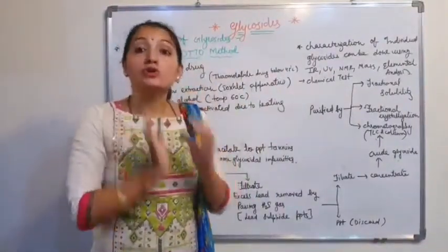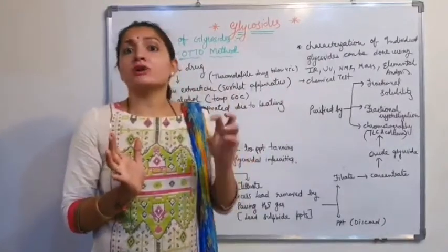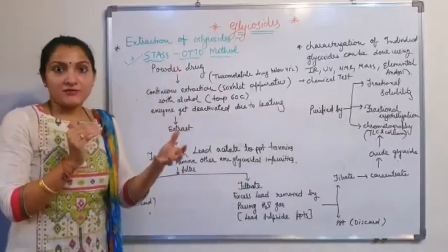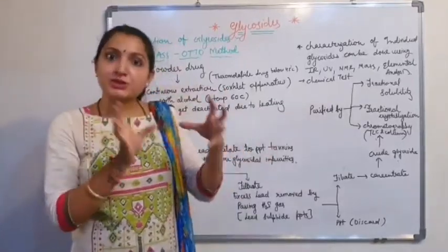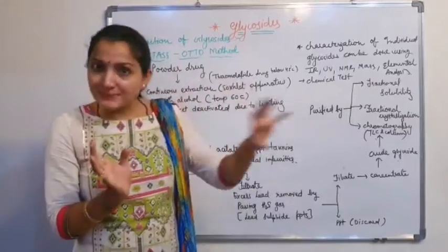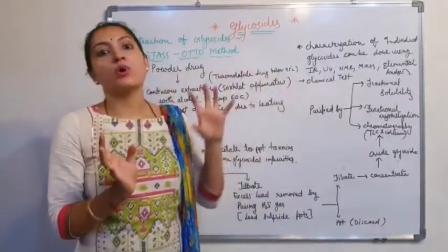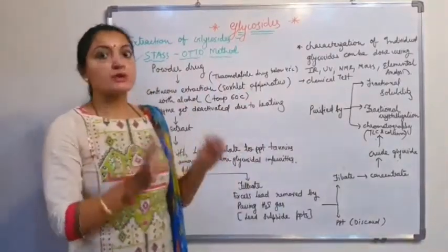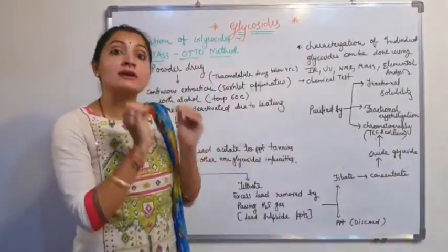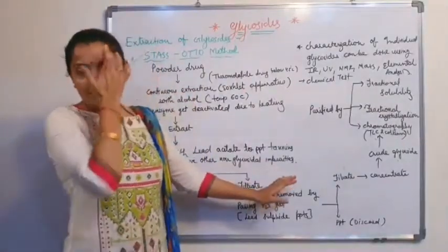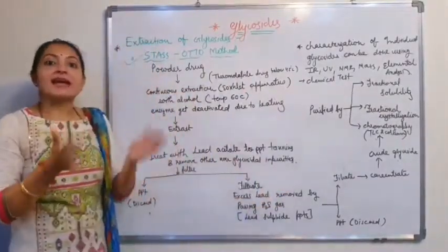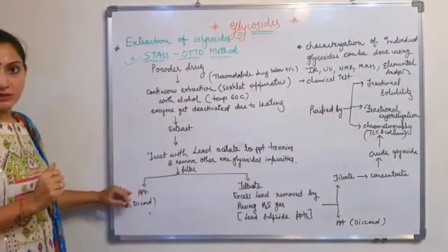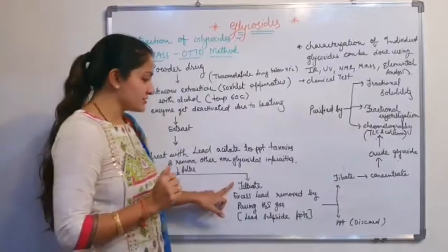Other non-glycosidic constituents are also precipitated out. By filtration, we remove these precipitates of unwanted constituents. We treat with lead acetate to remove tannin and non-glycosidic impurities, then filter to get the filtrate.